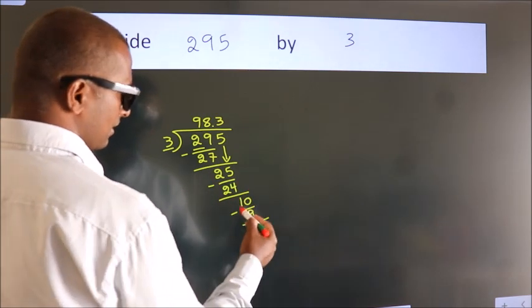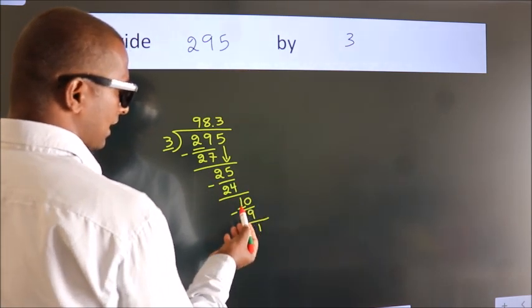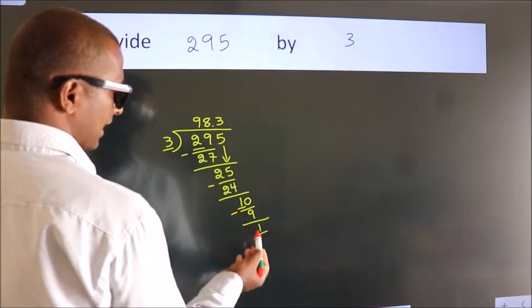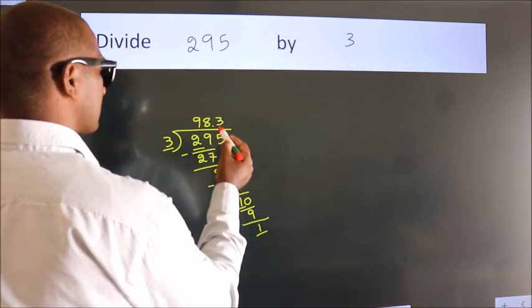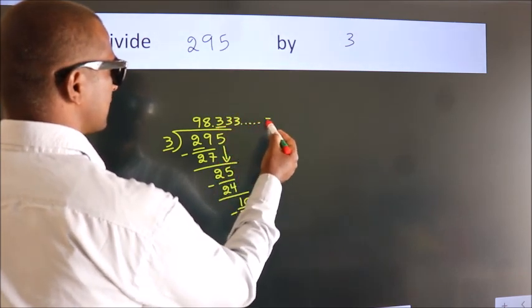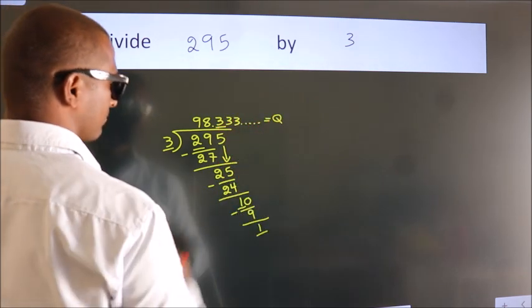Now you observe. We had 1 here, and we got 1 again. That means this number keeps on repeating. So this is our quotient with a repeating period.